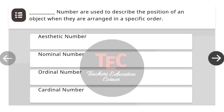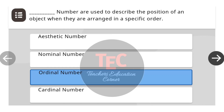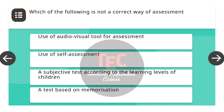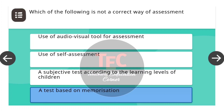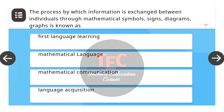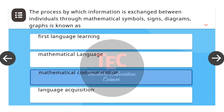Next question: Blank numbers are used to describe the position of an object where they are arranged in a specific order. The correct answer is ordinal numbers. Next question: Which of the following is not the correct way of assessment? The correct answer is a test based on memorization. Next question: The process by which information is exchanged between individuals through mathematical symbols, signs, diagrams, and graphs is known as — the correct answer is mathematical communication.